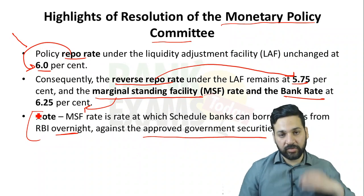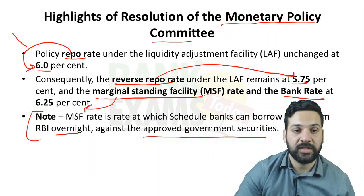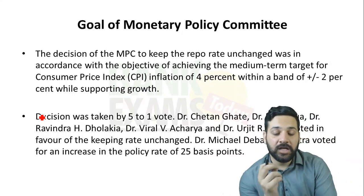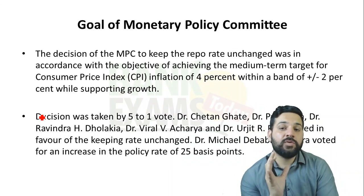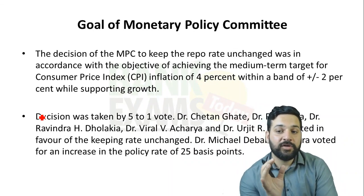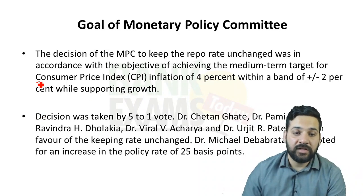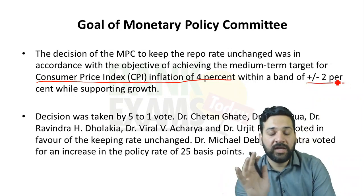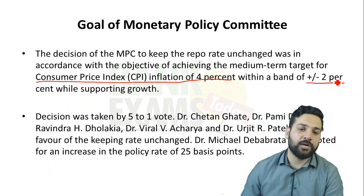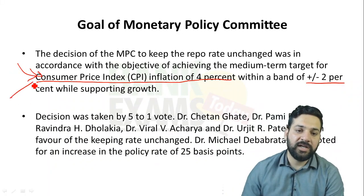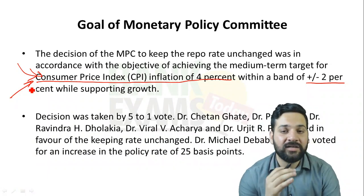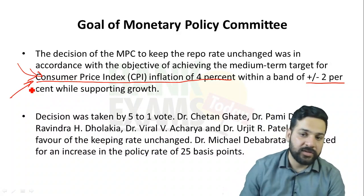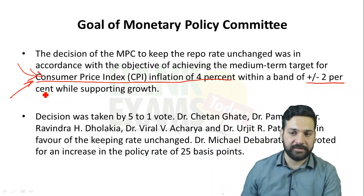What is the goal of the Monetary Policy Committee? The medium-term goal of the MPC is to achieve Consumer Price Index inflation of 4% with a band of plus or minus 2%, while supporting growth. So the committee is targeting a CPI inflation of 4% as its medium-term target.